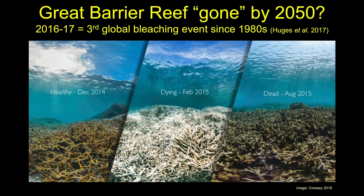Perhaps the greatest example is the Great Barrier Reef — the largest biogenic structure on earth, easily seen from space, that fantastic heritage off the northern side of Australia — which is basically dying. It's going through a series of bleaching events caused by various stressors.